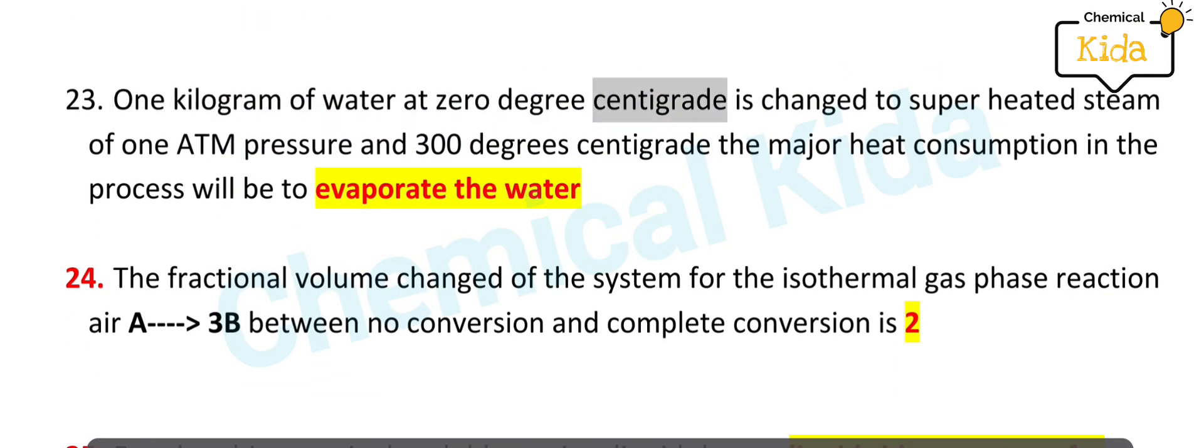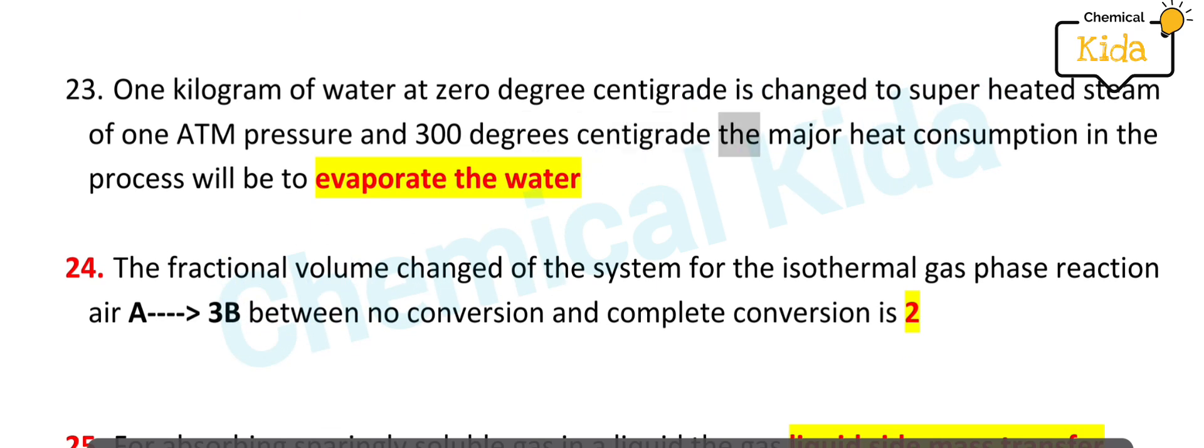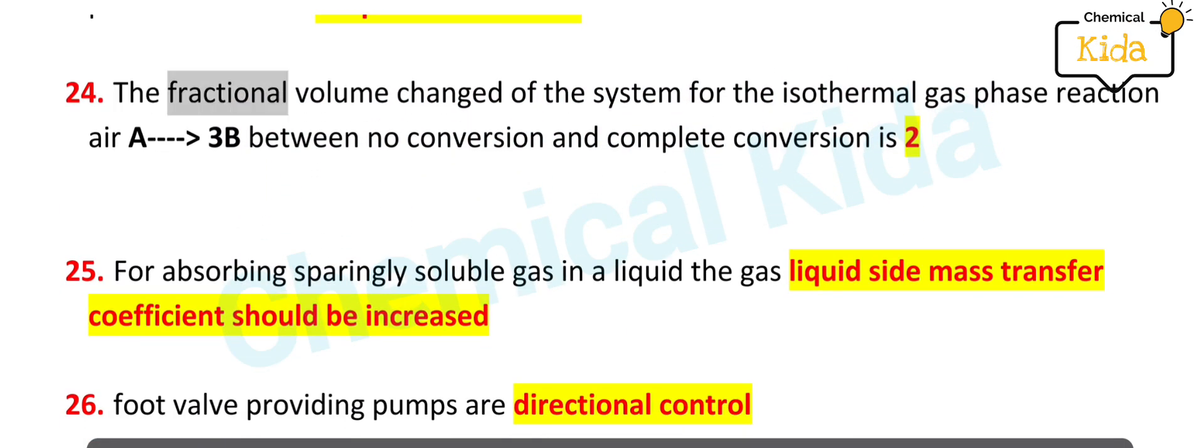1 kilogram of water at 0 degree centigrade is changed to superheated steam at 1 atm pressure and 300 degrees centigrade. The major heat consumption in the process will be to evaporate the water. The fractional volume changed of the system for the isothermal gas phase reaction A → 3B between no conversion and complete conversion is 2.